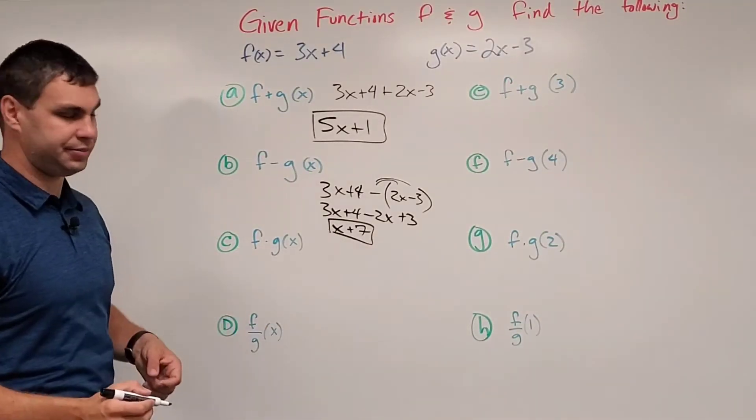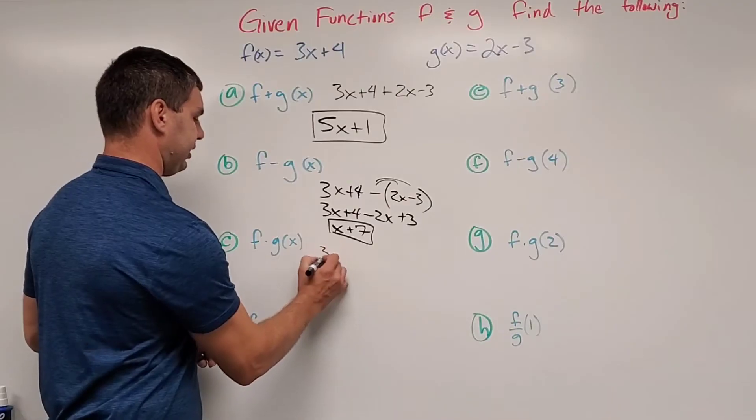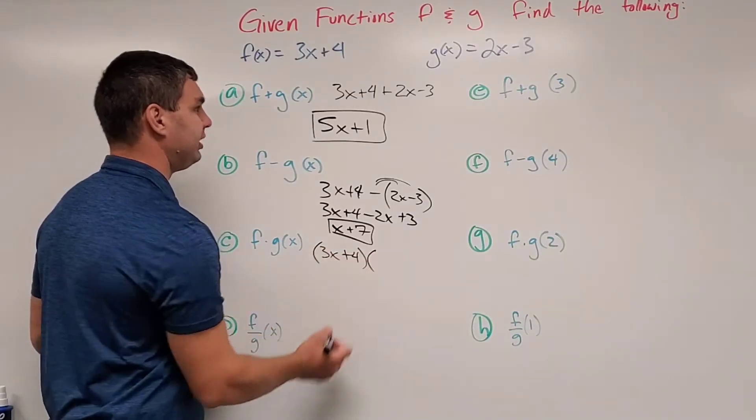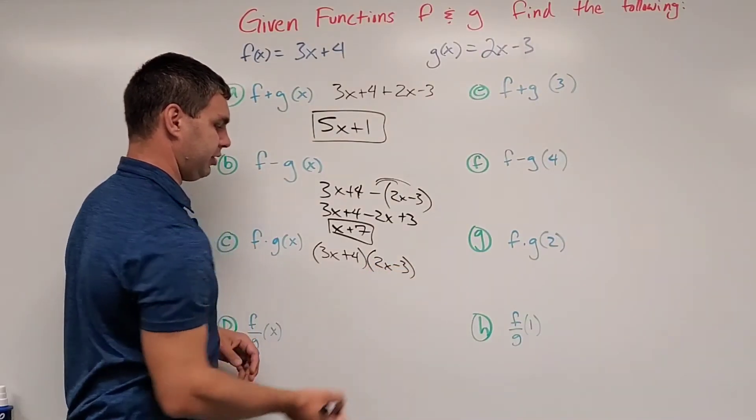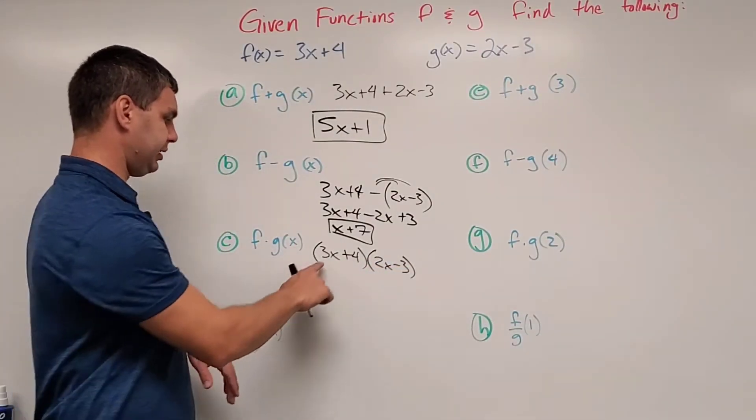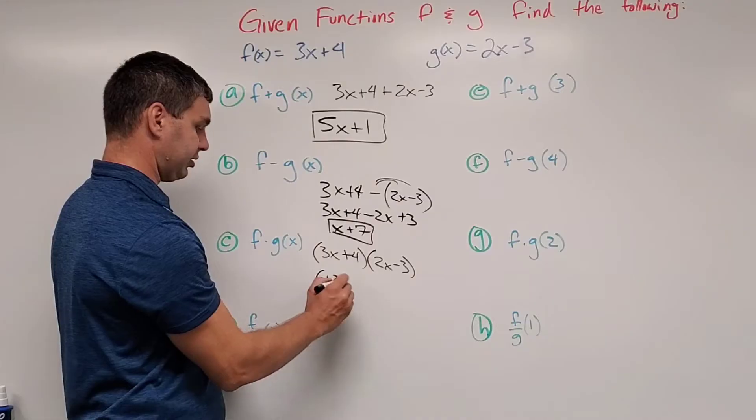What about f times g of x? f times g of x, letter c here. Well, write this out again, 3x plus 4 and then times the quantity 2x minus 3. This one we're going to have to FOIL or distribute twice. We get 3x times 2x is 6x squared, excuse me.